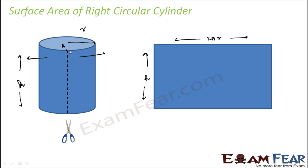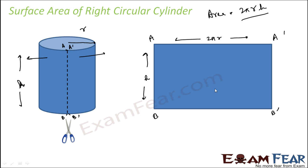Labelling the corners as A, A', B, and B' — when you open it up, you get a rectangle with these four corners. The area of this rectangle is length × breadth, which is 2πr × h = 2πrh. This area is nothing but the curved surface area of the cylinder. Thus, the curved surface area of the cylinder equals the area of this rectangular sheet, which is 2πrh.